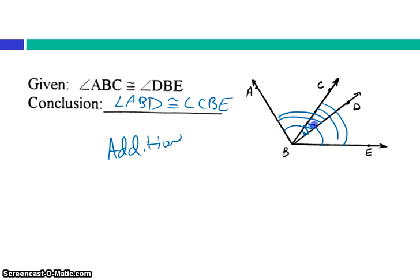For both of those angles, we added this center angle. Remember, with addition property, we need to add the same segment, or angle, or congruent segments, or angles. We can't just add things that we don't know are congruent. I know that angle is congruent to itself, because it's the same angle. So if I add that same angle to both of my angles on either side, I know that my resulting angles will also be congruent.